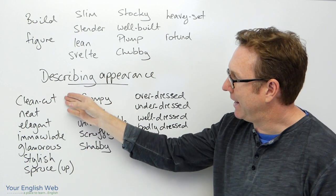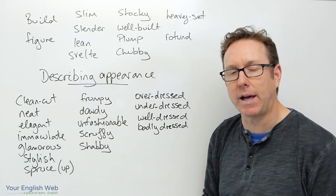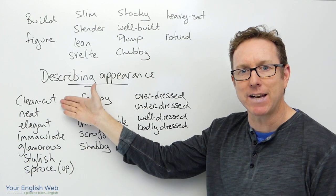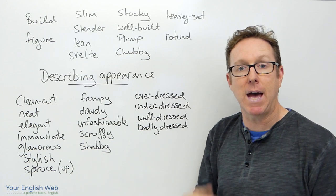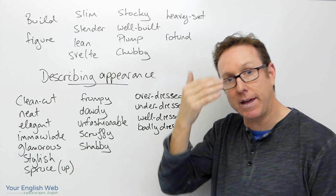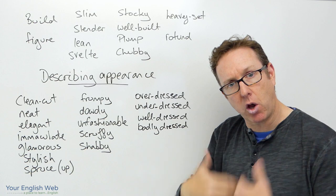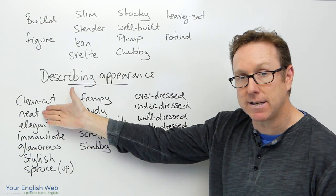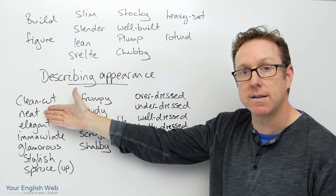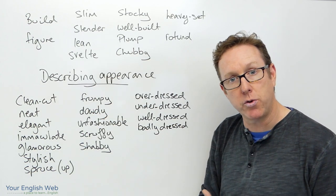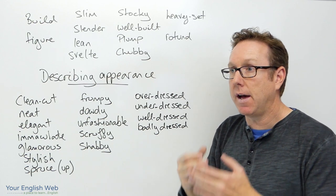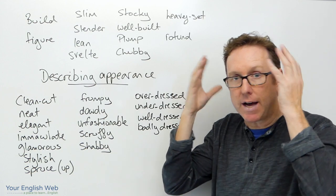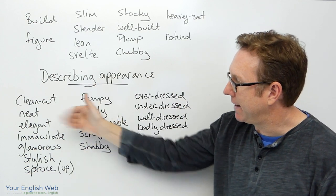Clean cut and neat are ways of describing people. Somebody who is very clean cut is very neat and tidy — perhaps well shaven, hair cut nicely, clothes very clean and nice. Neat is similar: a neat appearance with very neat clothes, no unshaven face, no untidy hair. Everything is neat and clean cut.